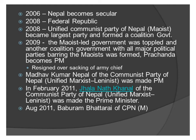In 2006, Nepal declared itself a secular state instead of being a Hindu kingdom. In 2008, it declared itself a Federal Republic. In 2008, the Unified Communist Party of Nepal (Maoist) became the largest party and formed a coalition government. In 2009, the Maoist-led government was toppled and another coalition government was formed. Prachanda became PM but had to resign after he sacked the army chief, which led to huge protests. Subsequently, Madhav Kumar Nepal of CPN-UML became PM, followed by Jhalanath Khanal of CPN-UML in February 2011, and then Baburam Bhattarai of CPN-M in 2011.